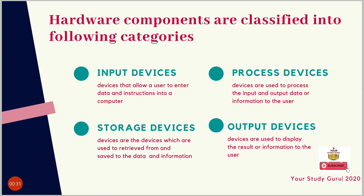Hardware components are classified into the following categories. First, input devices — devices that allow a user to enter data and instructions into a computer, sending the data to the computer and allowing you to interact with and control it. Second, process devices — devices used to process the input and output data or information.